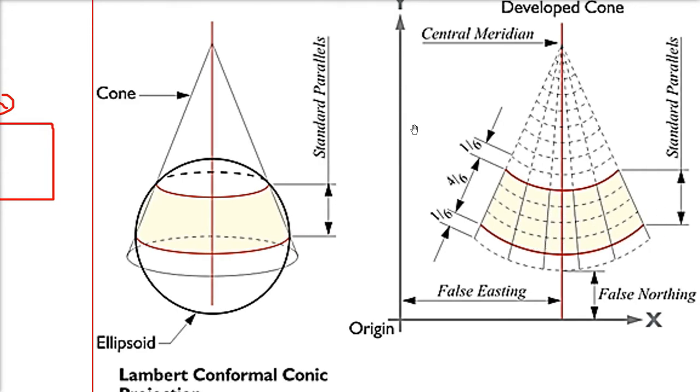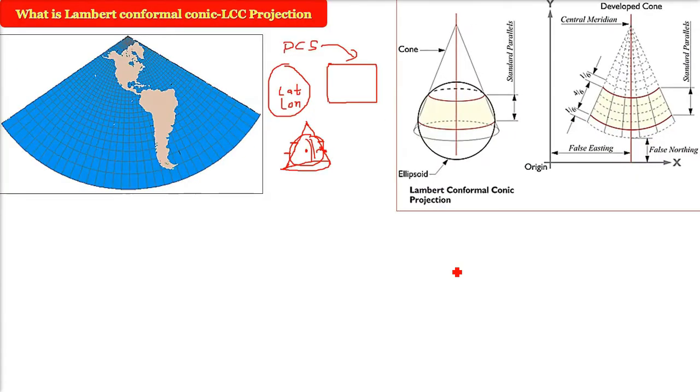The center one is the prime meridian of this developed cone and you have the easting and northing. The easting is the x-axis, northing is the y-axis. For any kind, even if you take the UTM also, it will be the false easting and false northing, then you have a central meridian also.